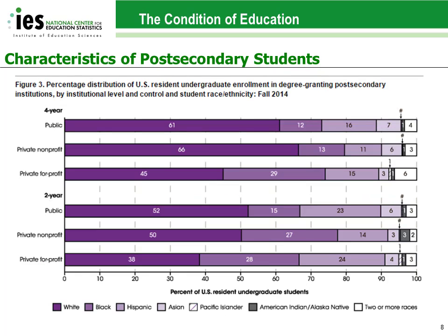In this figure, showing the 2014 percentage distribution of undergraduate enrollment by race and ethnicity, you'll notice that the Asian and Pacific Islander groups are presented separately for this more recent data collection. We see here that there is quite a bit of variability by race and ethnicity in the types of institutions in which students enroll.